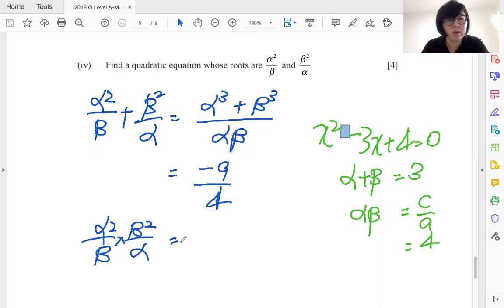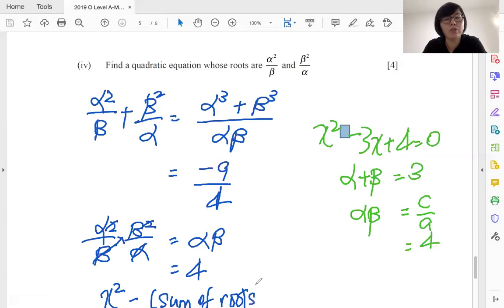All right, so that was simplified to give us, oh, nice, which is what we just found: four. All right, so now you need to form your equation, and it is simply x square minus sum of roots, and remember this represent the coefficient of your x, plus product of roots, and that is equals to zero.